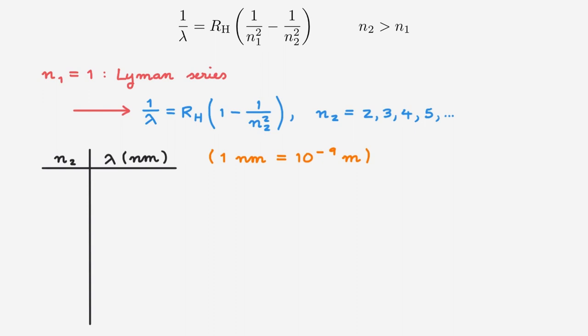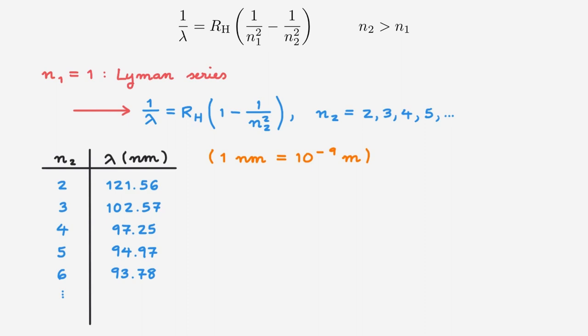Inserting the numerical values into the expression, for N2 equals 2 we get a wavelength of 121.56 nanometers. For N2 equals 3, we get 102.57 nanometers. For N2 equals 4, we get 97.25 nanometers. For N2 equals 5, we get 94.97 nanometers. For N2 equals 6, we get 93.78 nanometers. And eventually in the limit of very large N2, the wavelength tends to 91.17 nanometers. Each of these transitions corresponds to a spectral line in the emission spectrum of hydrogen, and together they form the Lyman series.